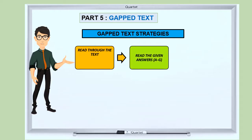The next strategy is to read the given answers. When you read the given answers, this will also help you to guess which answer fits the gap in the text. But remember that there is one additional answer that does not fit the text. This is called the distractor.